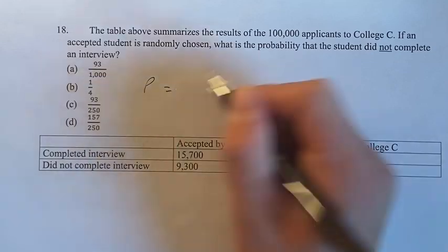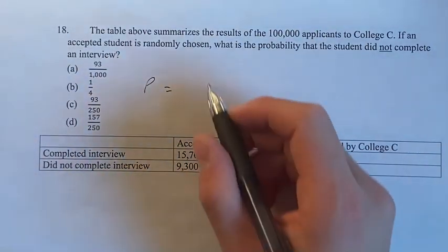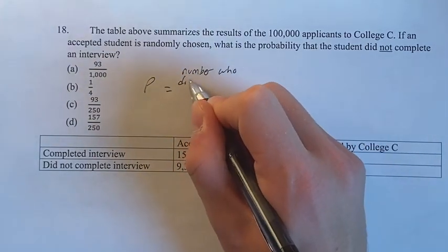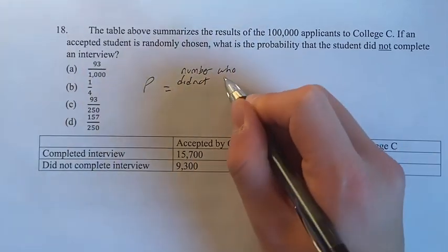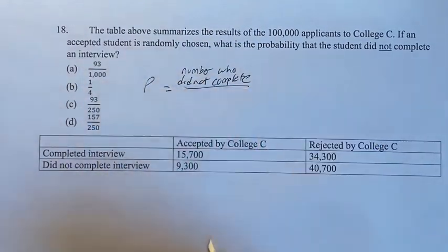So we're looking for a probability. This is equal to the number of people who did not complete an interview. We're taking this number out of people who were accepted.